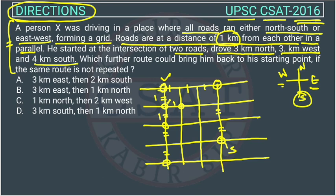Which further route could bring him back to his starting point if the same route is not repeated? This one is the starting point and this is the end point. This person wants to reach back to the starting point. They are asking which route he can follow, but he should not follow the same route from which he has already traveled. So now we will go through the options.